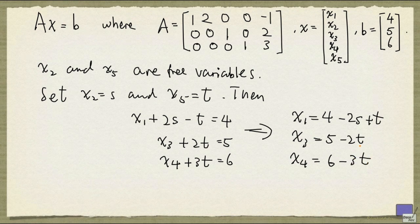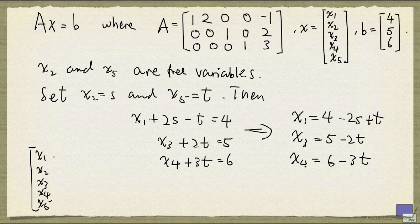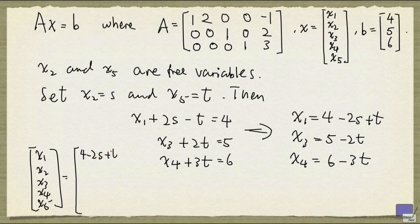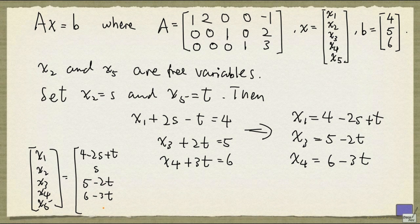Now we can write the solution in the form of a tuple. So x1, x2, x3, x4, and x5 can be written as: x1 is 4 minus 2s plus t, x2 is s, x3 is 5 minus 2t, x4 is 6 minus 3t, and x5 is t.